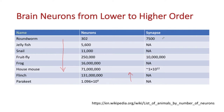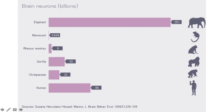The synapses also increase as the number of neurons increases. For higher animals like the elephant, there are about 251 billion brain neurons. Marmosets have much fewer total neurons. Monkeys have about 6 billion, gorillas about 33 billion, chimpanzees about 22 billion, and humans have 86 billion. One interesting thing to note is that the total number of neurons for a human is much less compared to the elephant — 86 billion versus 251 billion. Of course, the size of an elephant is much bigger than a human, so it is not just the total number of neurons that signifies the level of intelligence.